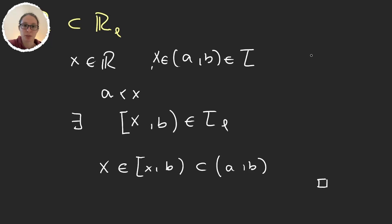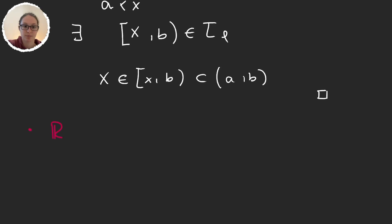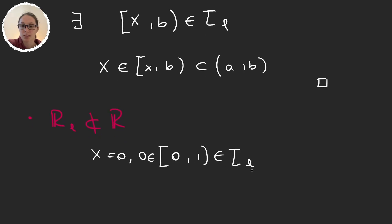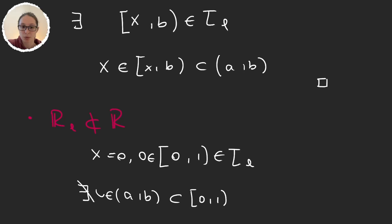Now let's prove that the reverse inclusion is not valid. Simply take x = 0. The set [0, 1) is a neighborhood of 0 in the lower limit topology. But there is no open interval (A, B) contained in [0, 1) that contains 0, since any such interval would extend to the left of 0. So this inclusion is not possible.